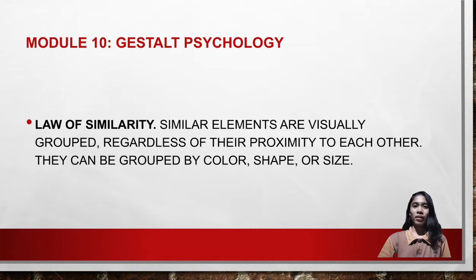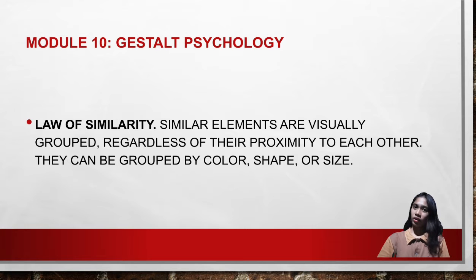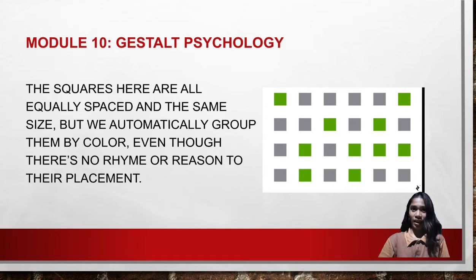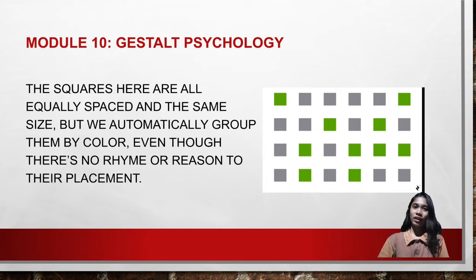The second law is the law of similarity. Similar elements are visually grouped regardless of their proximity to each other. They can be grouped by color, shape, or size. As you can see, the squares here are all equally spaced and the same size, but we automatically group them by color, even though there is no rhyme or reason to their placement.